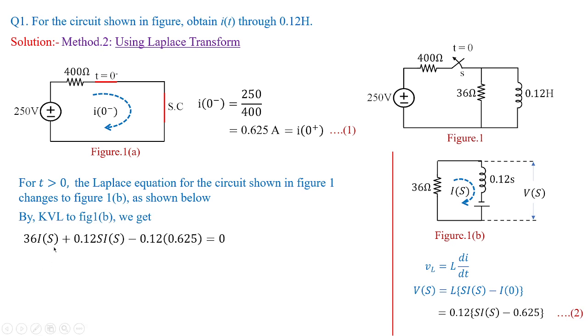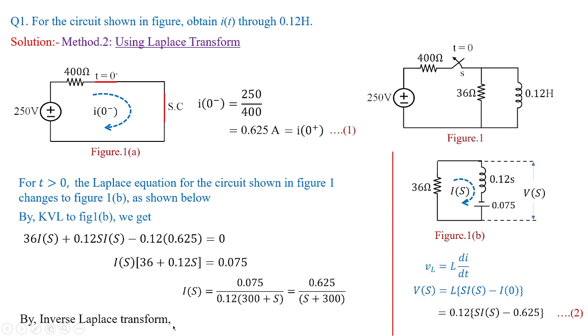What we are going to do is 36I(s) plus V(s) equal to 0. But what is V(s)? V(s) is nothing but 0.12sI(s) minus 0.12 of 0.625. Simplify this equation and we are going to get the value of I(s) which is equivalent to 0.625 divided by s plus 300. It is simple mathematics and you need to keep in mind that you can change the frequency value to time domain value with the help of inverse Laplace. By inverse Laplace transform this 0.625 remains as it is but 1 by s plus 300 becomes e to the power of minus 300t. So, I(t) is equal to 0.625e to the power of minus 300t amperes.